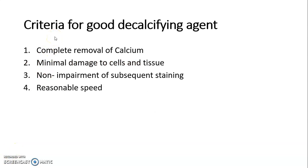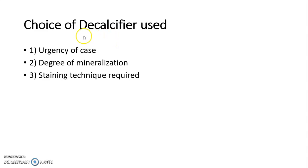The criteria for good decalcifying agents are: the agent should completely remove calcium from the tissue, cause minimal damage to cells and tissues, cause non-impairment of subsequent staining, and have a reasonable speed. The choice of decalcifier depends on the urgency of the case, the degree of mineralization of the tissue, and the subsequent staining technique required.